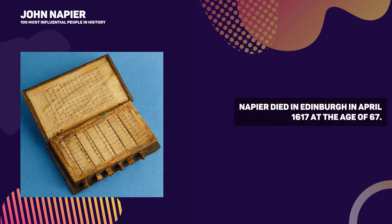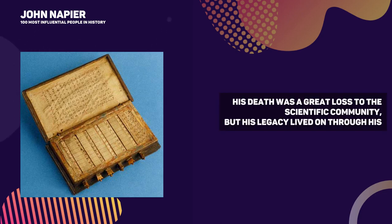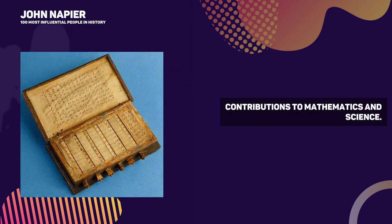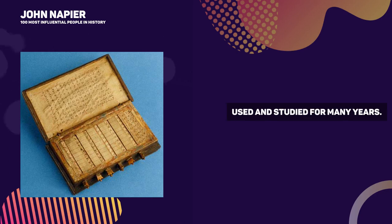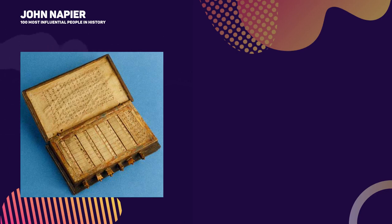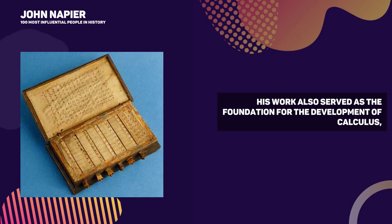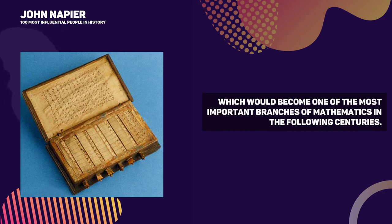Napier died in Edinburgh in April 1617 at the age of 67. His death was a great loss to the scientific community, but his legacy lived on through his contributions to mathematics and science. Logarithms, Napier's bones, and his other mathematical and scientific contributions were widely used and studied for many years. His work also served as the foundation for the development of calculus, which would become one of the most important branches of mathematics in the following centuries.